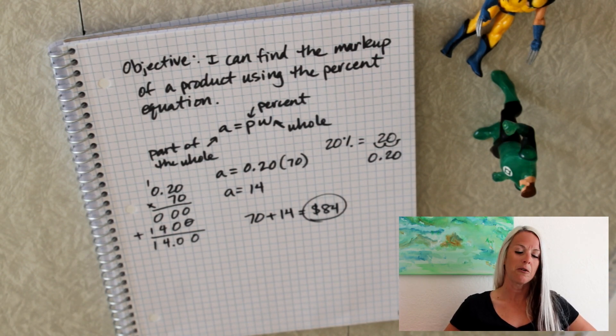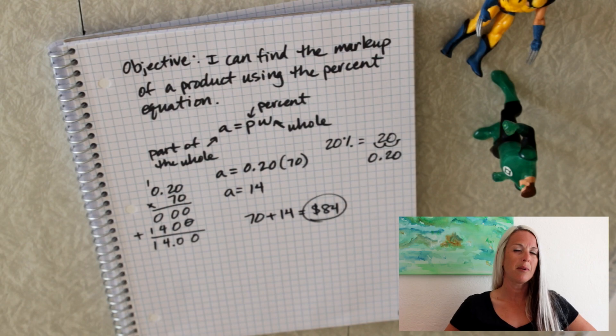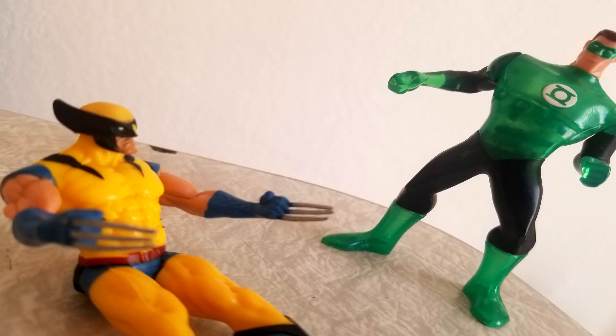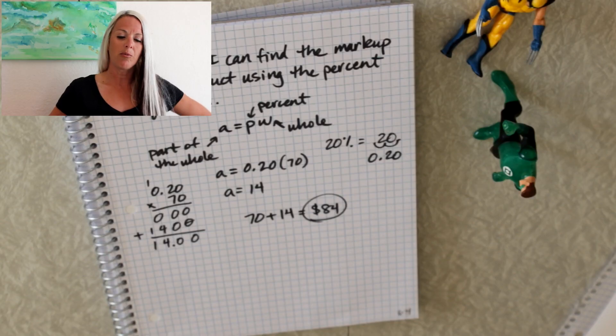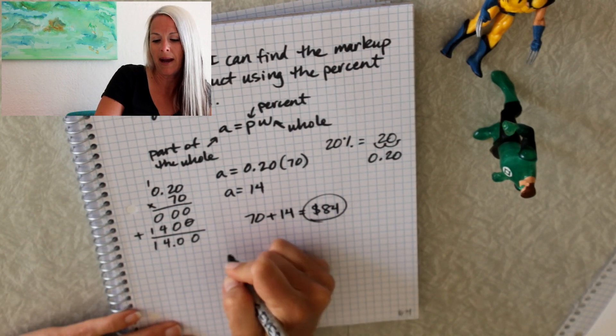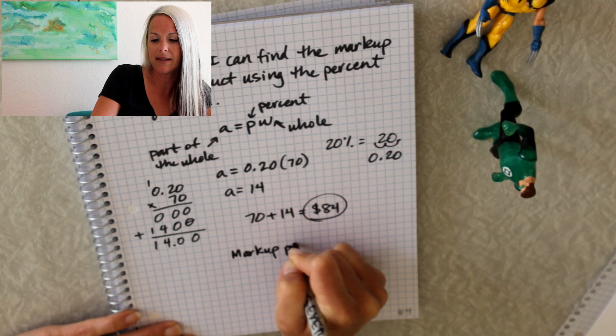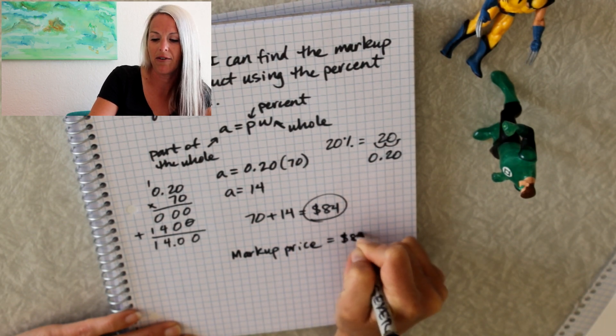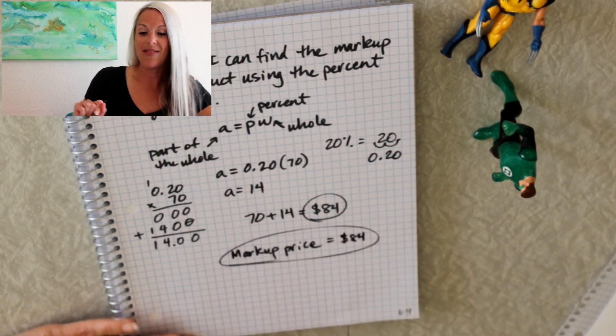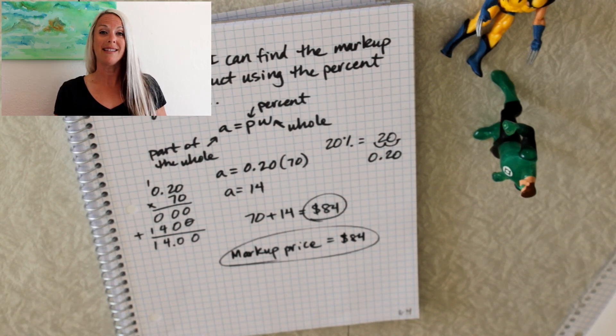So Logan will pocket $14 of change. We'll see if Hal goes for it, but Logan's pretty persuasive. So I bet he does. So we'll go ahead and finish this out by labeling this. The markup price is $84. And that should complete your notes and your ISN.